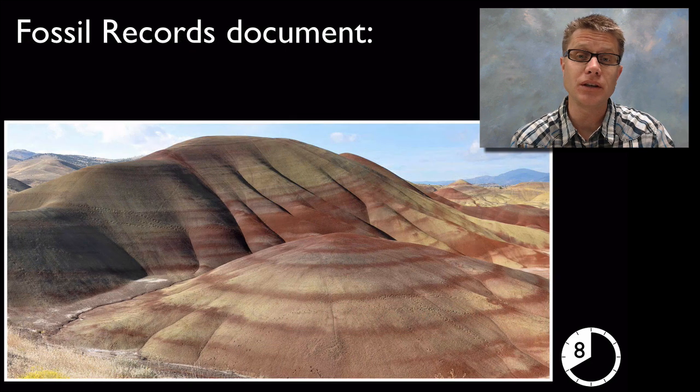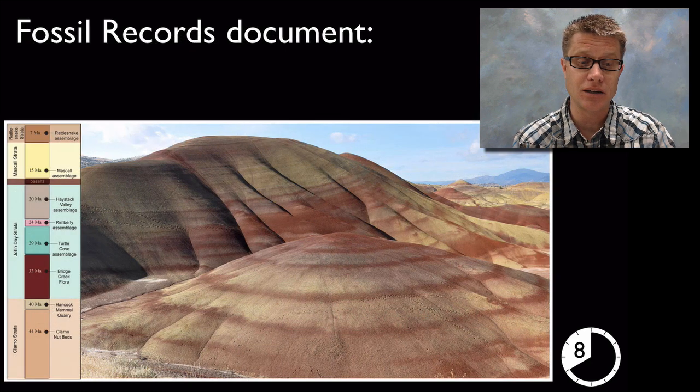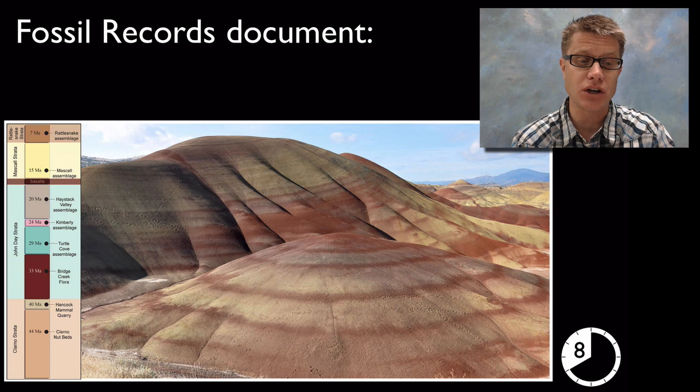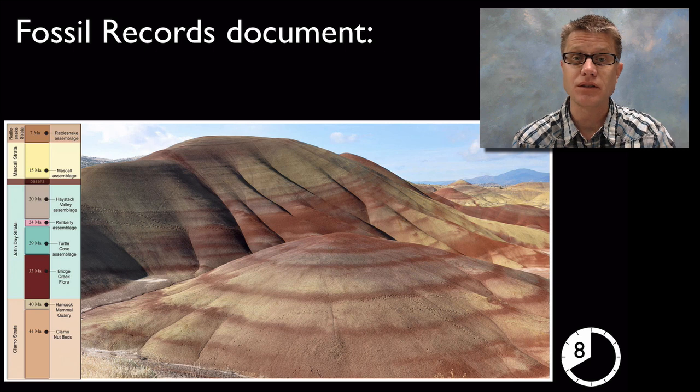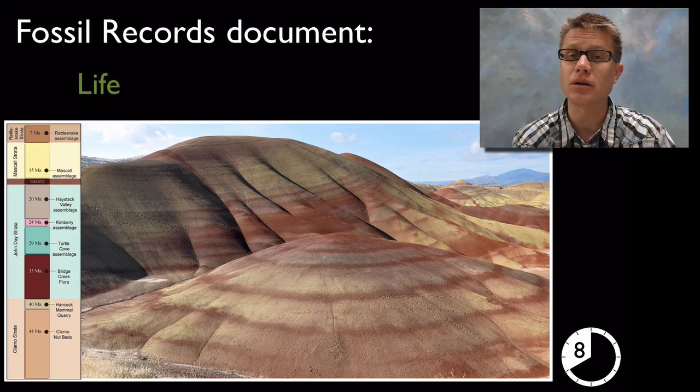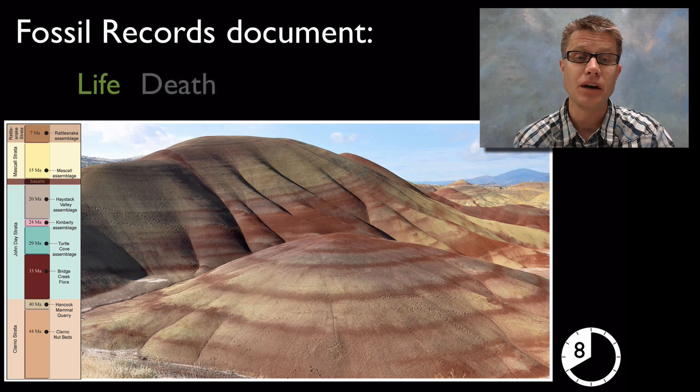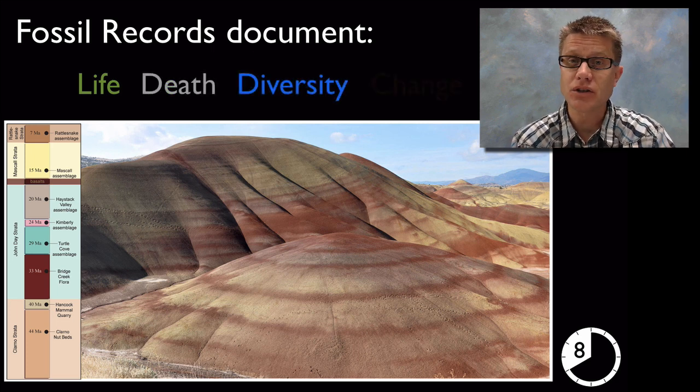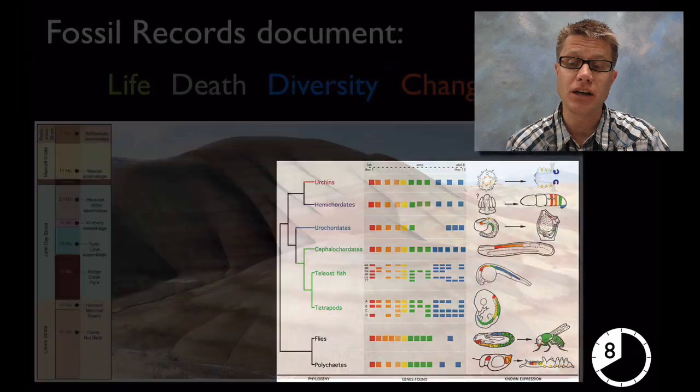And so the fossil records are really documenting—right here we're looking at these fossil beds which are in the John Day strata. And what you'll find is as we look through it, we can look at different times. So that gives us time. And then we can look at their relative locations to one another. And so we can learn about how life came to be, how life ended, how species went extinct, the great diversity of life, and then how species have changed over time.